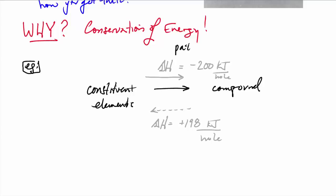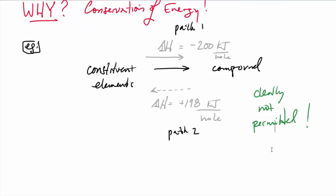And say you had a reverse enthalpy going back in the direction of an endothermic reaction of +198 kilojoules per mole. Well, if that were the case, you would do the forward reaction, get 200 kilojoules, then run the reverse one, pay only 198, have a bonus of two kilojoules left over, and just do this over and over. Clearly that's not permitted. The conservation of energy law forbids it.